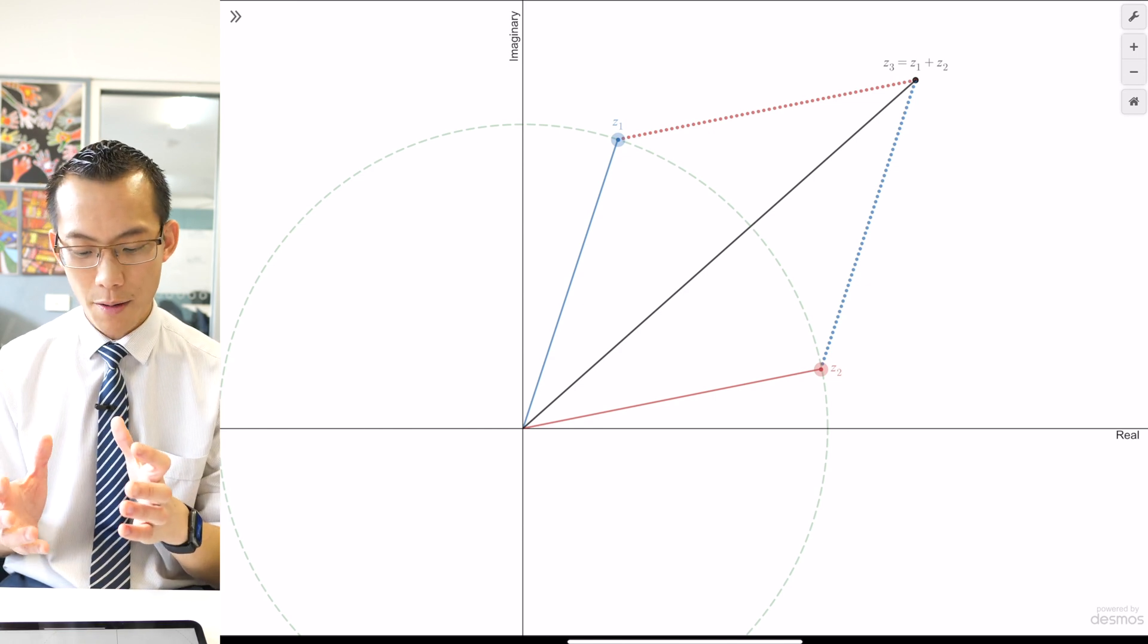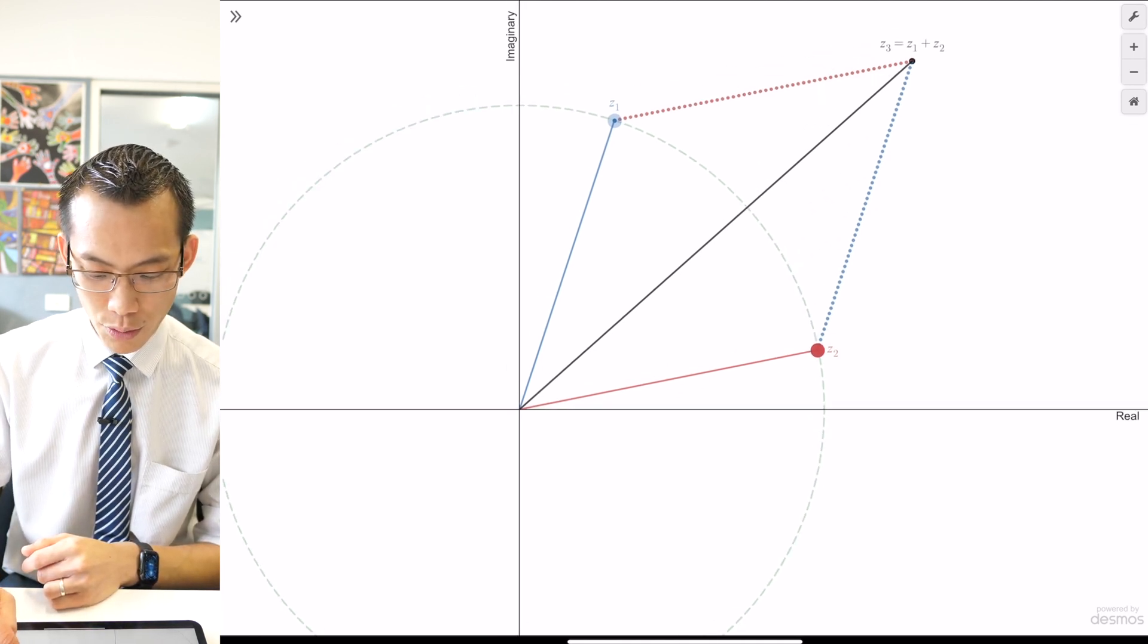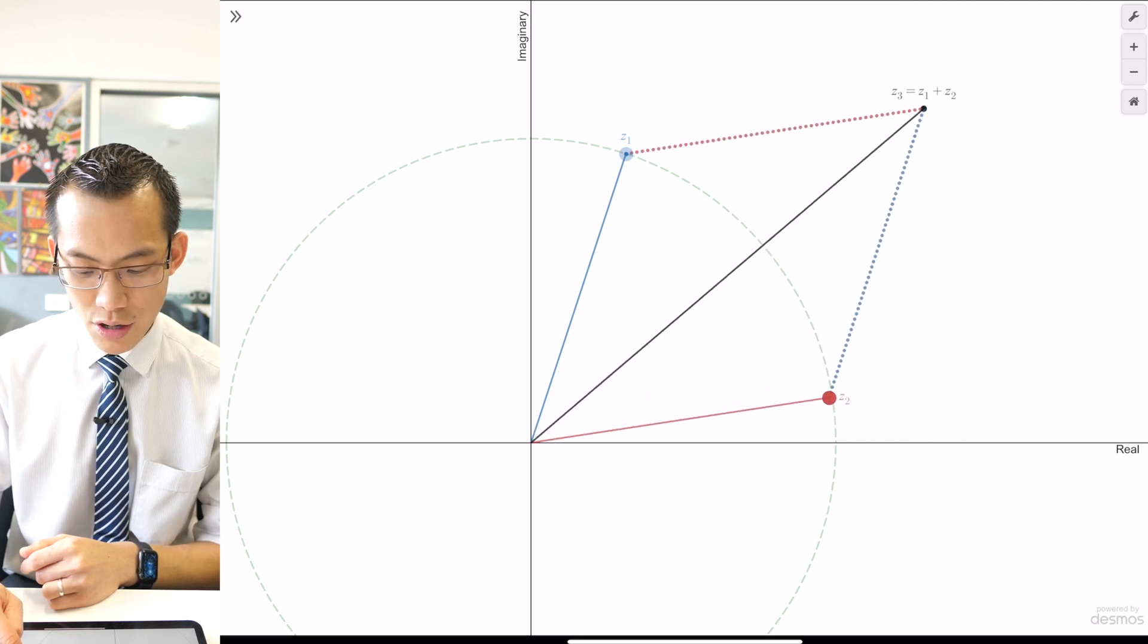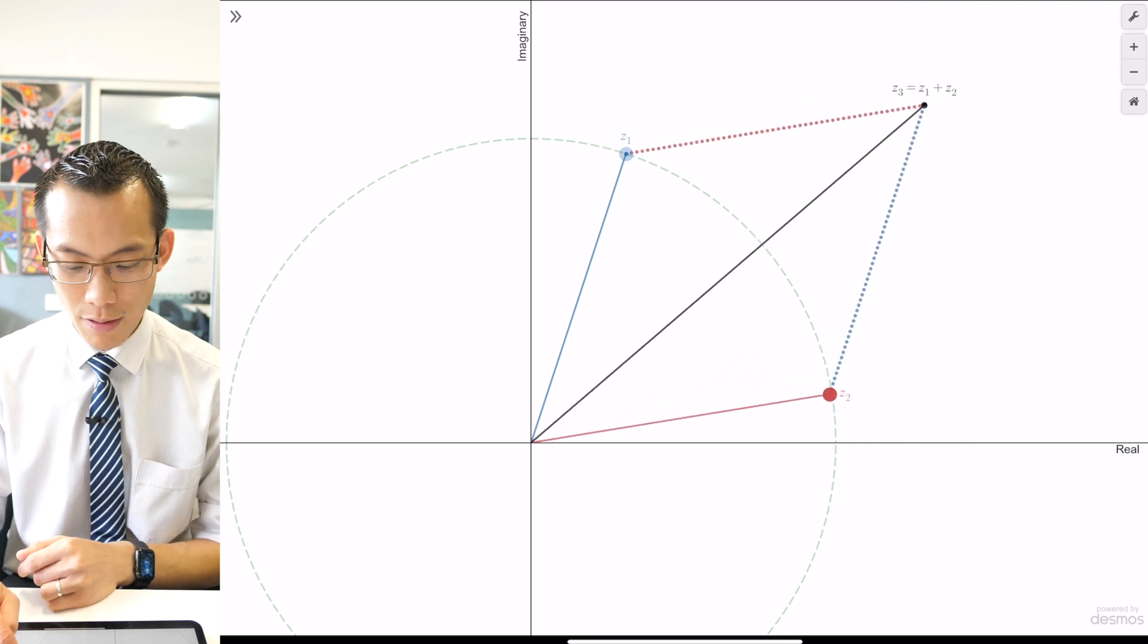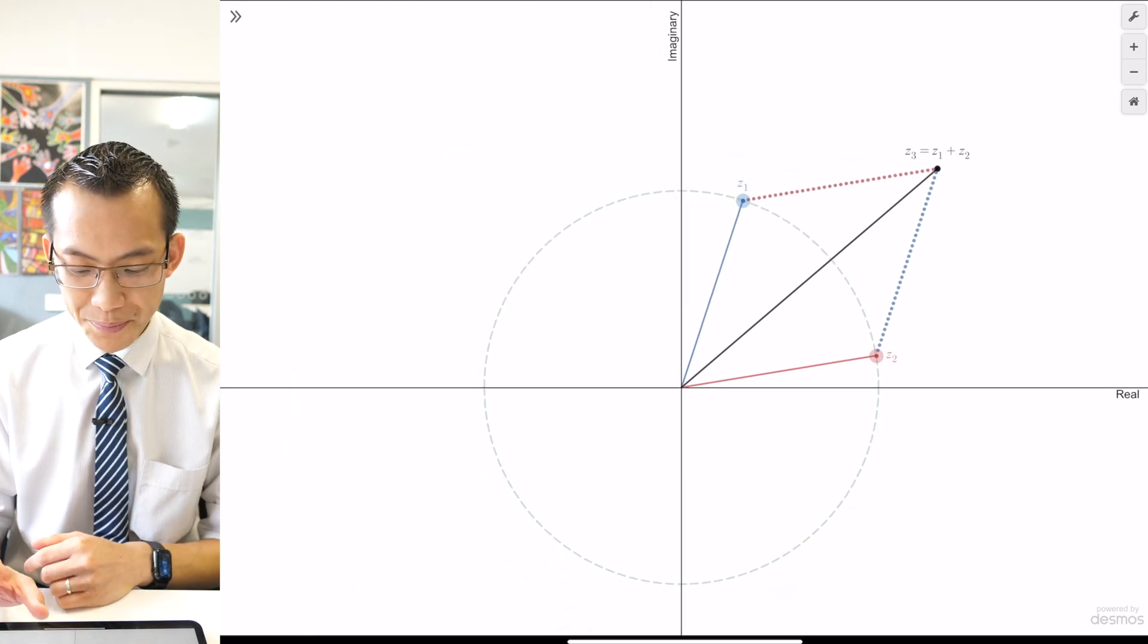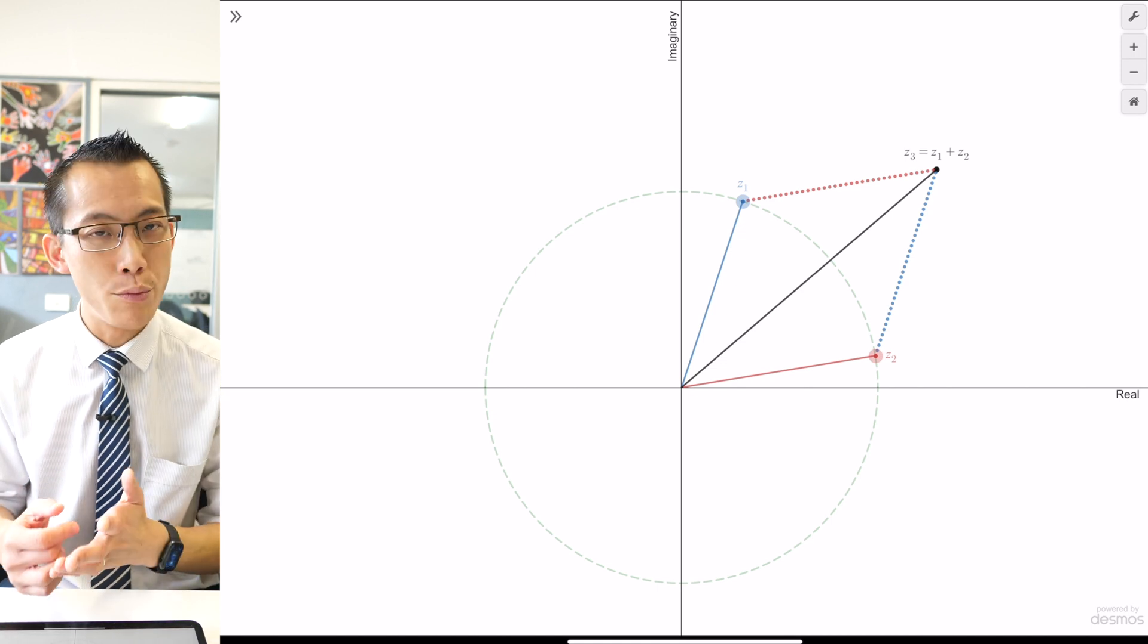No matter where you arrange Z1 and Z2 with varying angles, I can move Z1 up this way or down this way, you can see you're still getting a rhombus and that's how the logic works. It's really important that you can convince yourself that this will still work if you move out of the first quadrant.